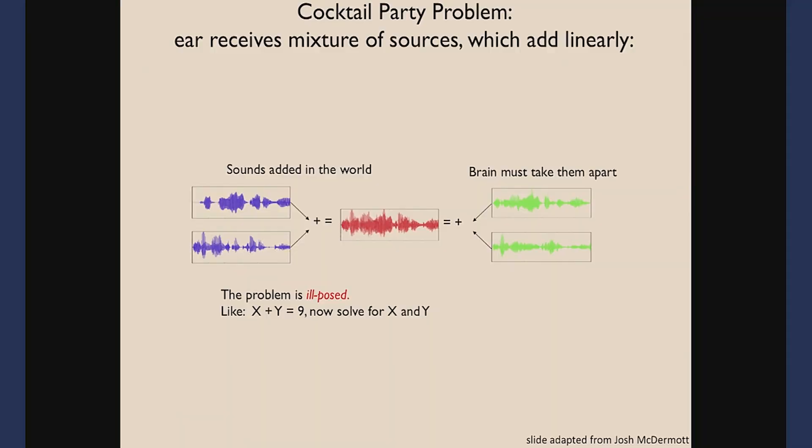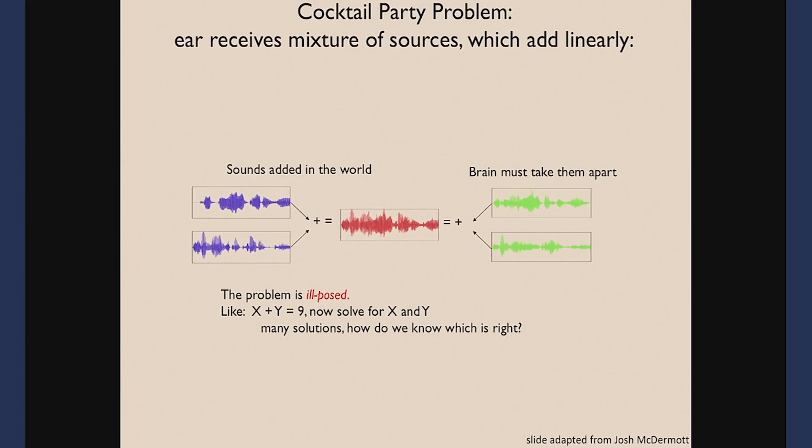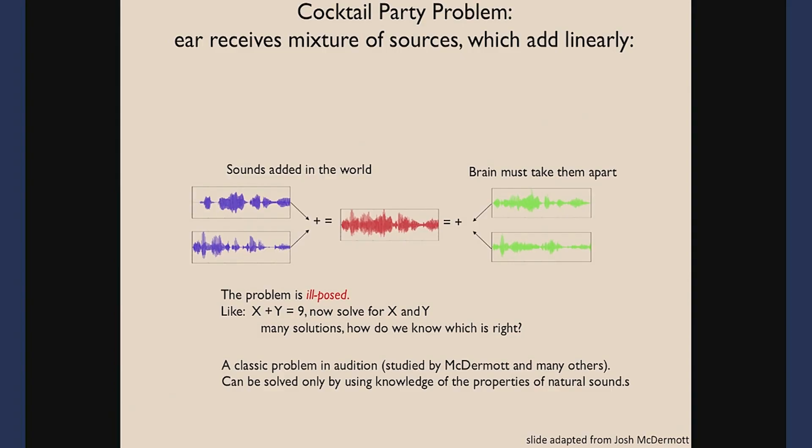Whenever we're in an ill-posed problem with multiple possible solutions, the usual answer is to bring in some other assumptions, world knowledge, or constraints to narrow that large space of possible answers down to the correct one. This is a classic problem in audition that people have talked about for many decades. Josh McDermott in this department does a lot of work on it — it can be solved in part by knowledge of natural sounds. One more challenge for audition comes from reverb.